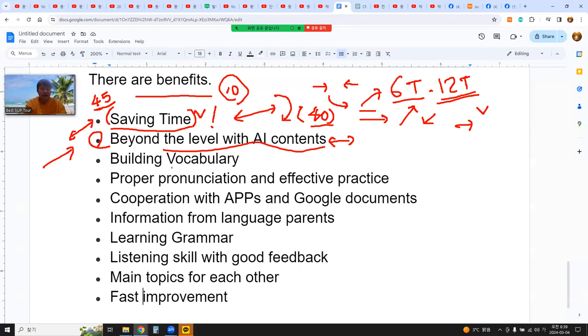And then also building vocabulary is keyword. Learning language is knowing vocabulary. To express or to talk or write some topic, at least you should know about more than 10,000 words. And then you can use these words to express your idea. So building vocabulary is a very key point.